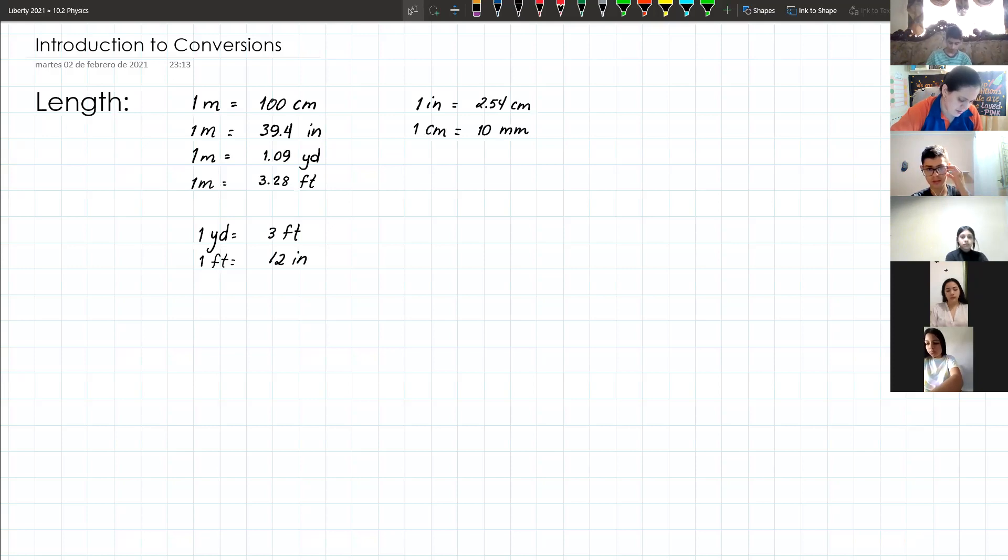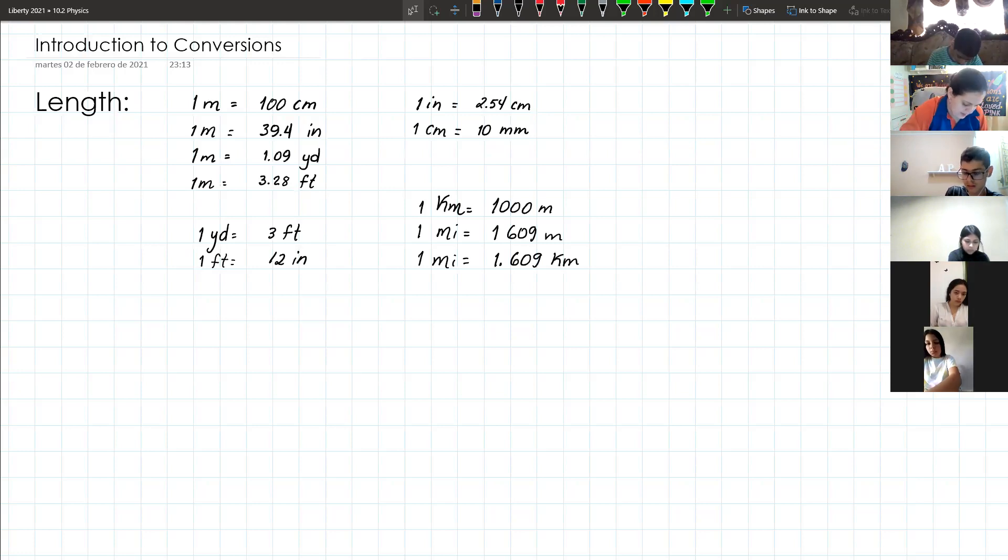And then we have some other conversion factors that we use to measure really long distances. One of them is kilometer, one kilometer is equal to 1,000 meters. One mile is equal to 1,609 meters, but also one mile is equal to 1.609 kilometers. These are the units that I can tell you that are very useful to memorize. So you must keep them in your notebook.